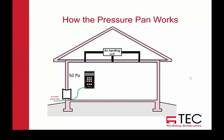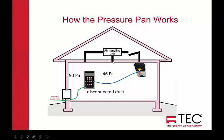How the pressure pan works: bring the house to 50 pascals and put the pressure pan over the opening. If you're getting zero pascals with that duct, you know that duct run is very tight — low numbers mean tight ducts. If you're getting a really high number — for example, your house is at 50 and you're reading 46 pascals — it's likely disconnected and reading the pressure in the attic rather than the pressure in the duct system. Really high numbers are an indication of a disconnect or a partial disconnect.